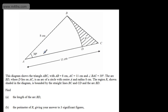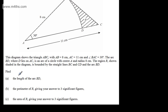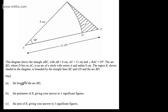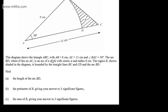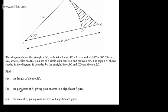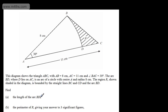Let's move on to an A-star question. The diagram shows triangle ABC with AB = 8 cm, AC = 11 cm, and angle BAC = 30°. The arc BD, where D lies on AC, is an arc of a circle with centre A and radius 8 cm. Region R, shown shaded, is bounded by straight lines BC and CD and the arc BD. We need to find: A) the length of arc BD, B) the perimeter of R to three significant figures, and C) the area of R to three significant figures.